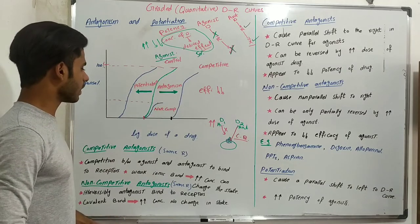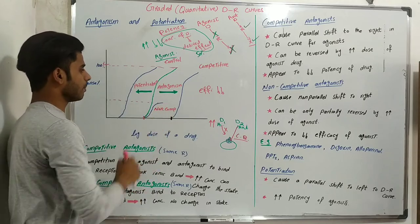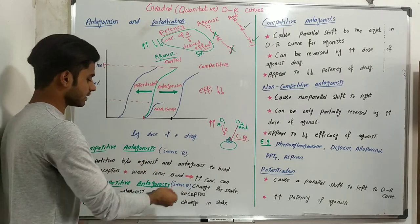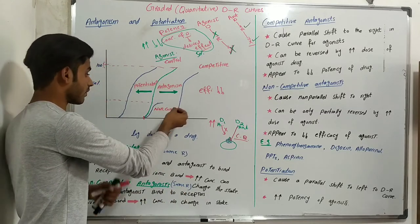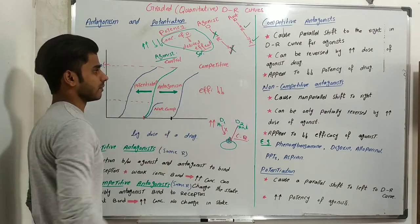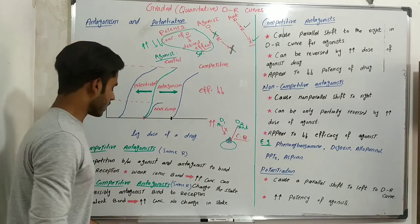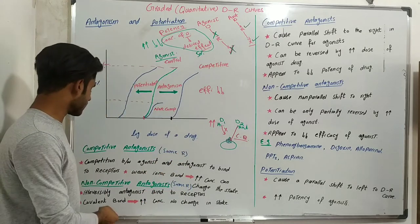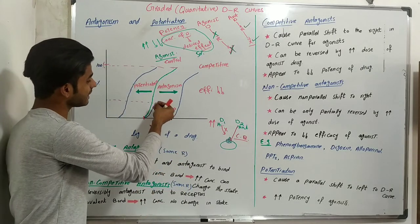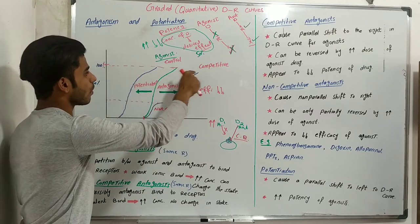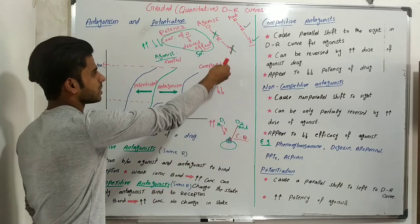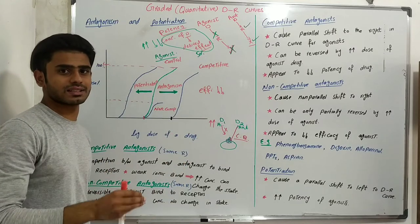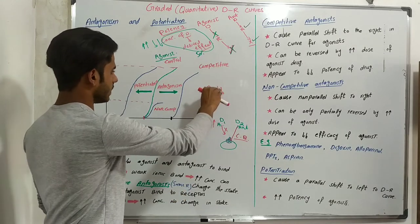To repeat: in non-competitive antagonism the curve moves a little to the right because we increase the concentration, but it also moves downward because the covalent bond is permanent and irreversible. No bond formation means no response, so response decreases. This means the effectiveness of the drug decreases and its efficacy decreases.